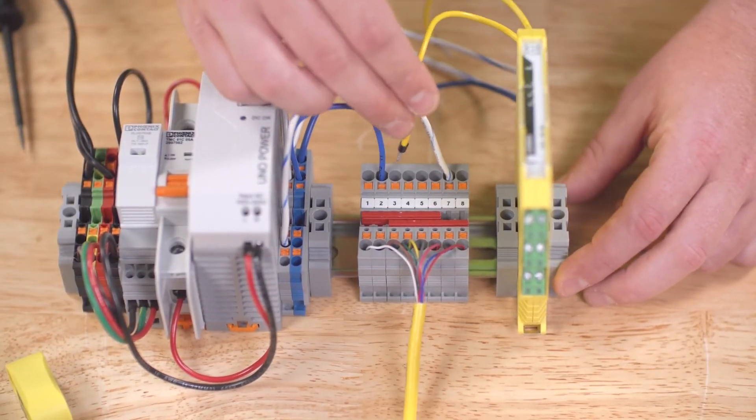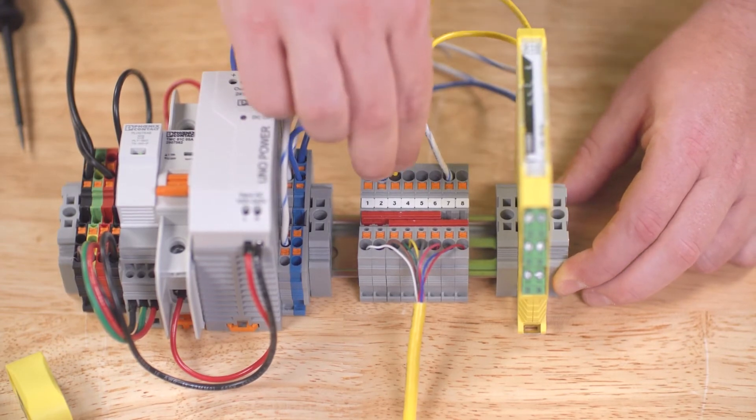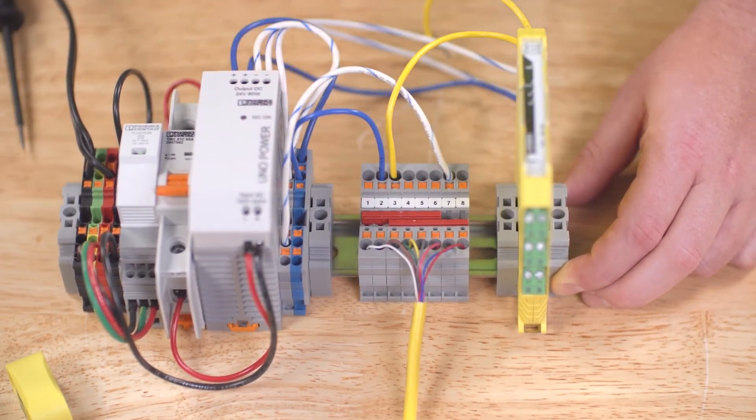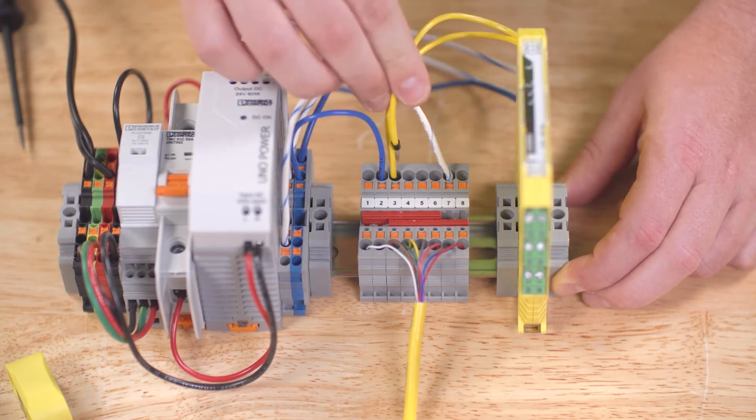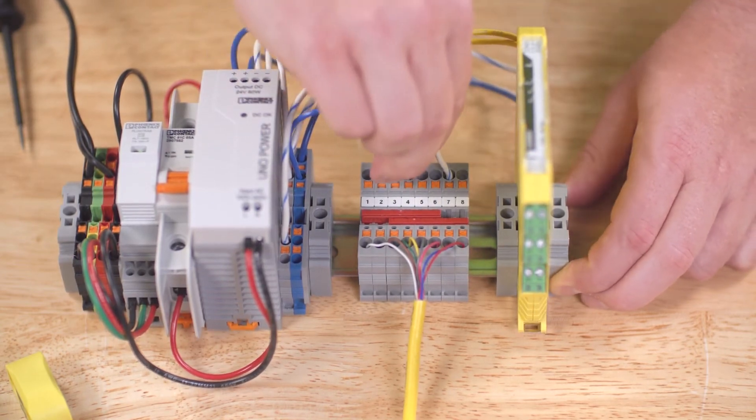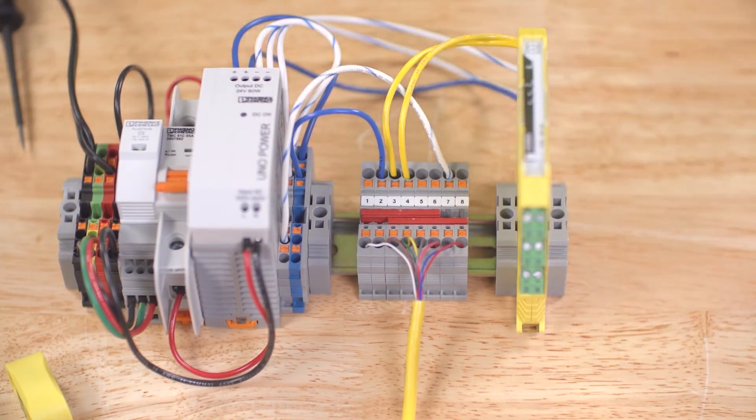Finally, we'll connect the safety outputs F-O-1A and F-O-1B to the safety relay sensor channels. Pin 3 connects to S12 and pin 4 connects to S22 of our PSR MC40 relay.